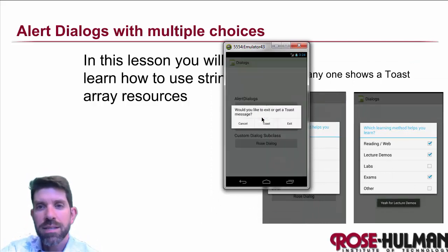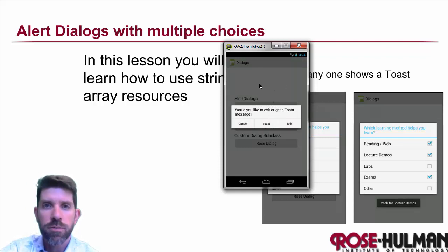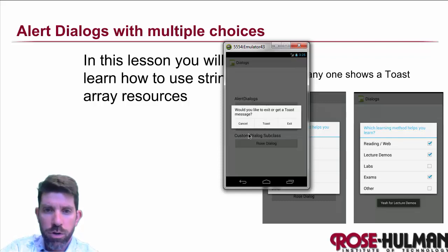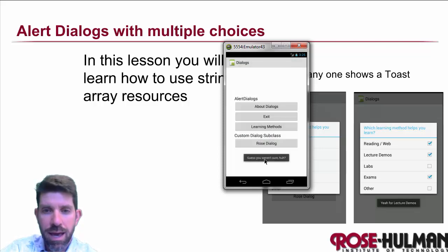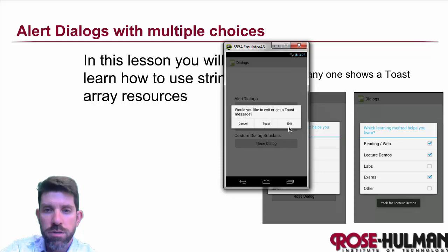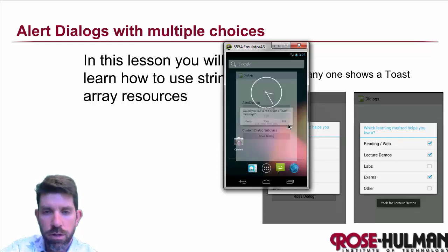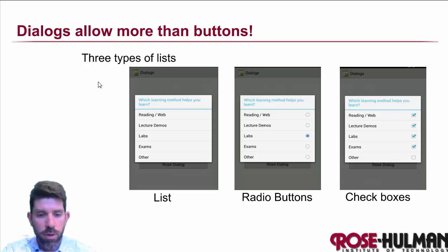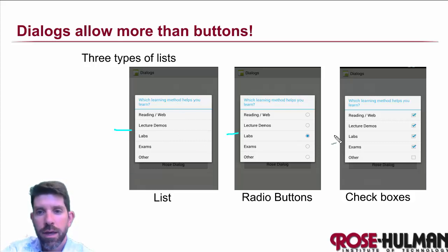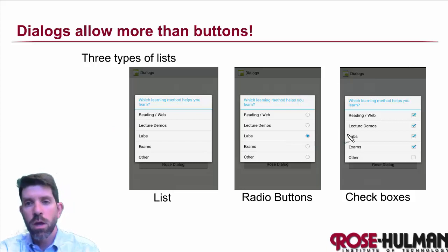Before we start, let me show you my solution for the last exercise — the exit dialog. Clicking outside the dialogue closes it, just like the cancel button. Clicking toast shows a little toast with a custom message, and clicking exit closes the activity altogether. Dialogues allow us to do more than just buttons — the types of lists are standard lists, lists with radio buttons, and lists with checkboxes.